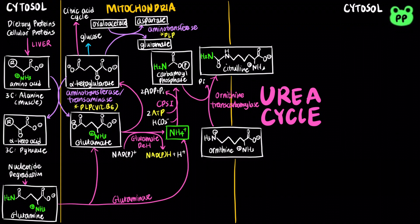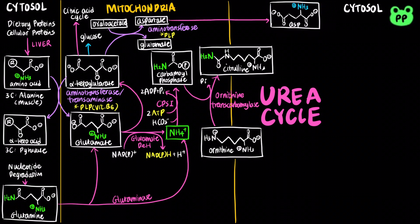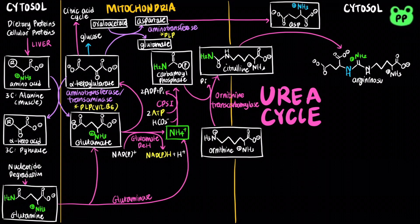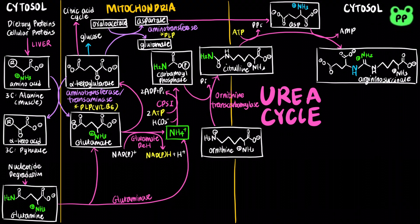The subsequent three steps of the urea cycle take place in the cytosol. The second step brings in the second amino group (indicated by blue) from aspartate, which is condensed with citrulline to form argininosuccinate. This reaction is catalyzed by argininosuccinate synthetase, which hydrolyzes an ATP molecule to AMP and inorganic pyrophosphate.